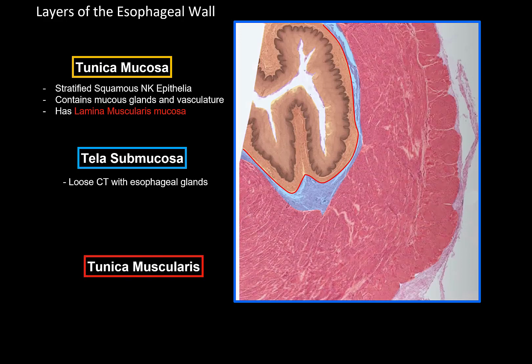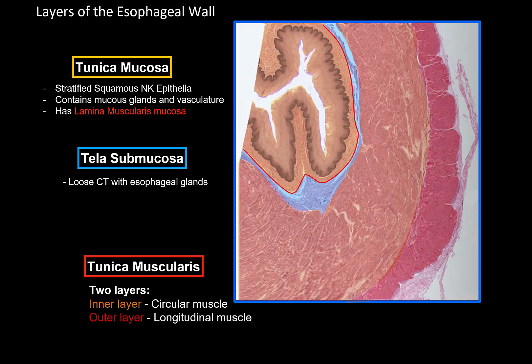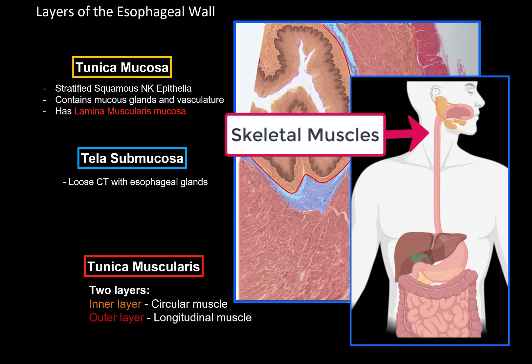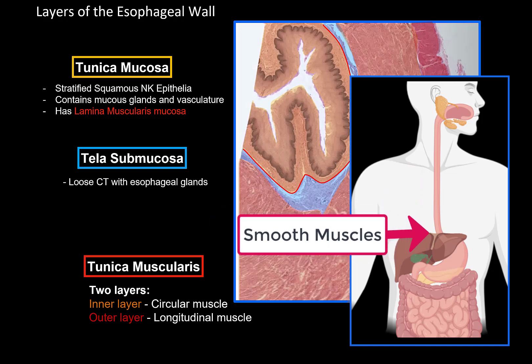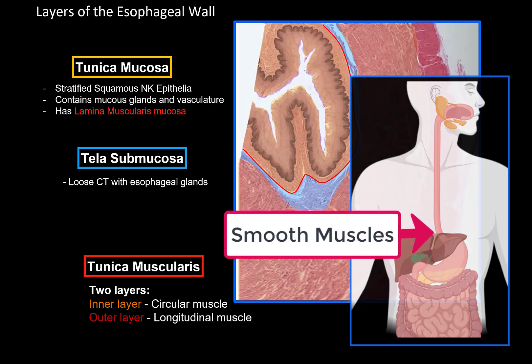After that we have the tunica muscularis, which consists of two layers: the inner layer has circular muscle fibers arranged circularly, while the outer layer has longitudinal muscle fibers. The upper third of the esophagus consists of striated skeletal muscle, which is gradually replaced by smooth muscle tissue, so that at the lower third of the esophagus it is all smooth muscle.